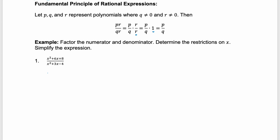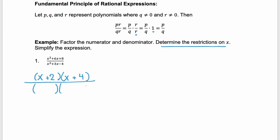In the next example, we need to factor the numerator and the denominator, then determine restrictions — remember that's very important — and then we're going to simplify. Factoring the numerator: we have a trinomial, and because the leading coefficient is 1, it factors into two binomials. We'll have an x for the first term of each. Our second terms need to multiply to 8 but add to 6, so those are factors of plus 2 and plus 4. Same process for the denominator: with a leading coefficient of 1, the binomials both start with x, and we're looking for two values that multiply to negative 4 but add to 3 — a positive 4 and a negative 1.